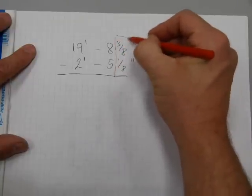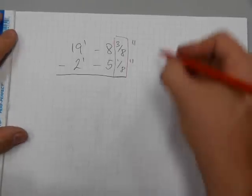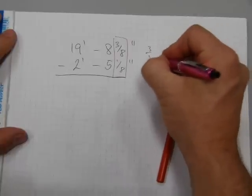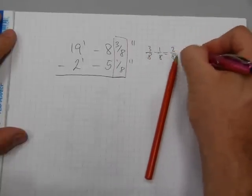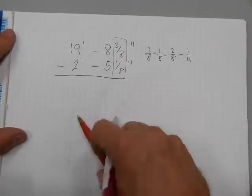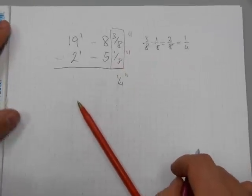You have to do the fraction subtraction first. 3 eighths minus 1 eighths. 3 eighths minus 1 eighths is 2 eighths, which reduced to lowest terms is a quarter inch. A quarter inch carries down here and is part of the result.